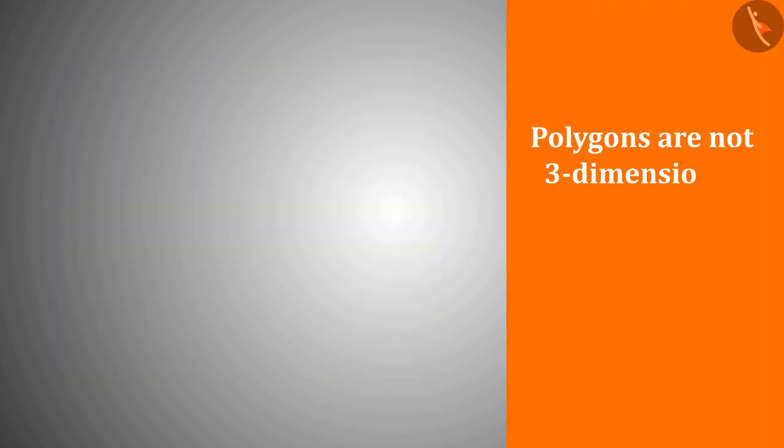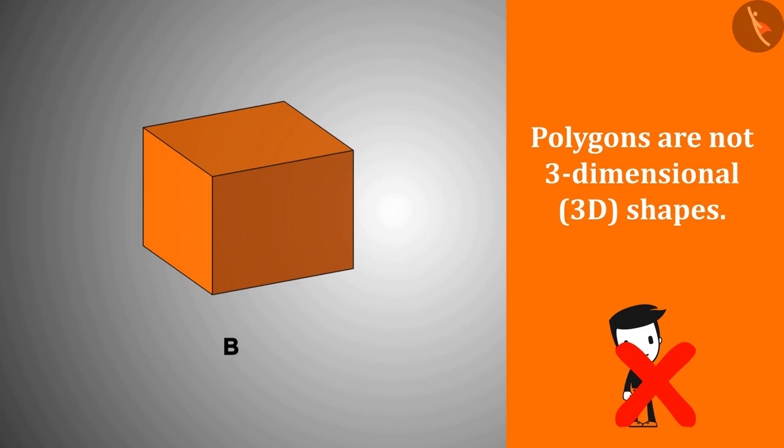Polygons are not three-dimensional or 3D shapes, but 3D shapes can be made using them. Like a box—a box is not a polygon, but all the faces of this box are polygons.